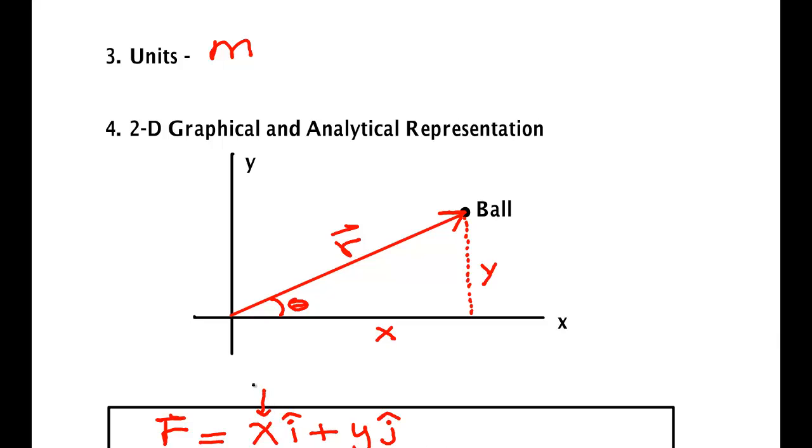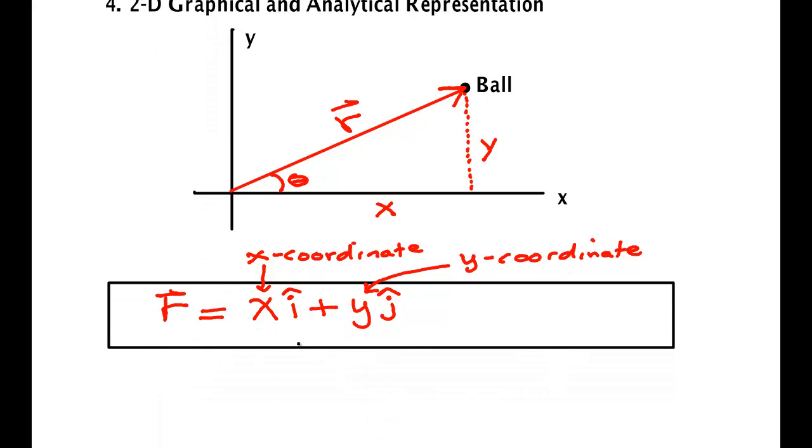This right here is called the X coordinate, just like it is for any other vector. This is called the Y coordinate. i hat is a unit vector that points in the positive X direction, and j hat is a unit vector that points in the positive Y direction.